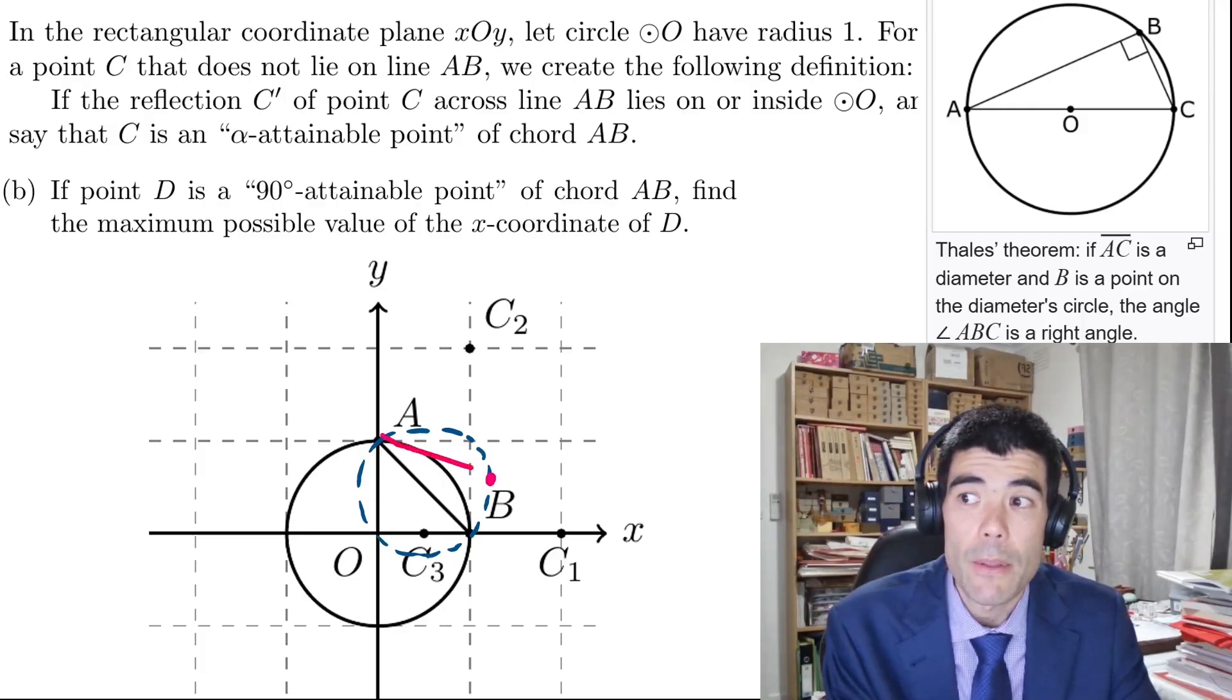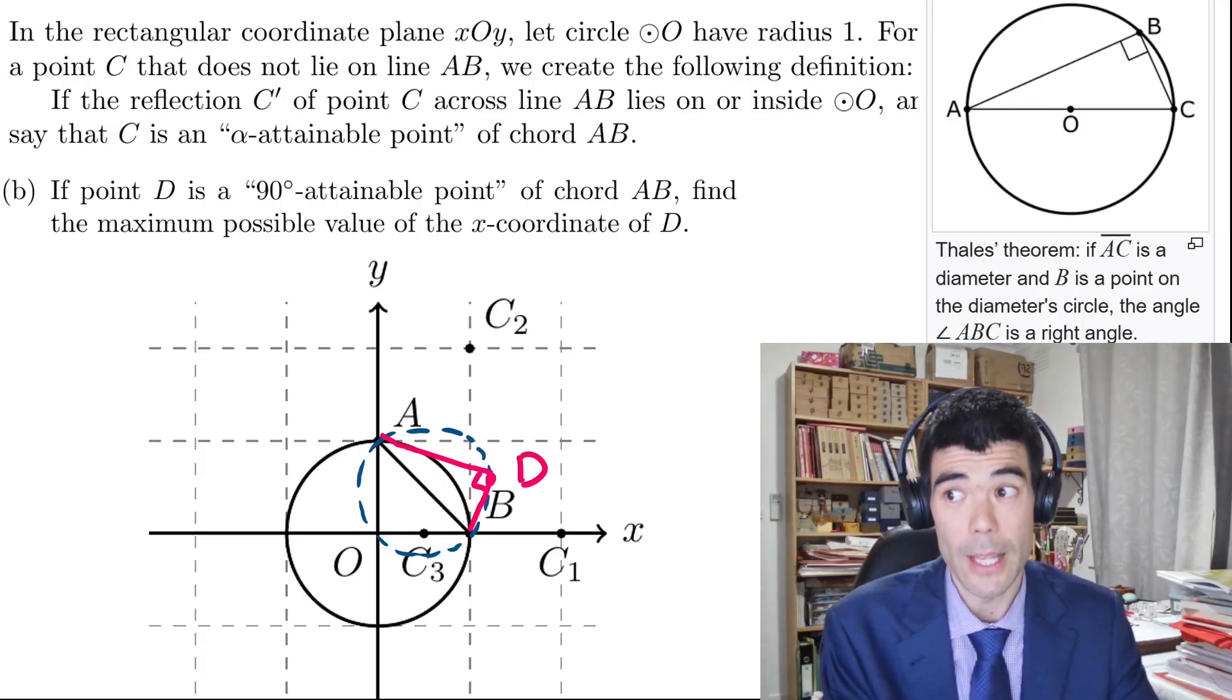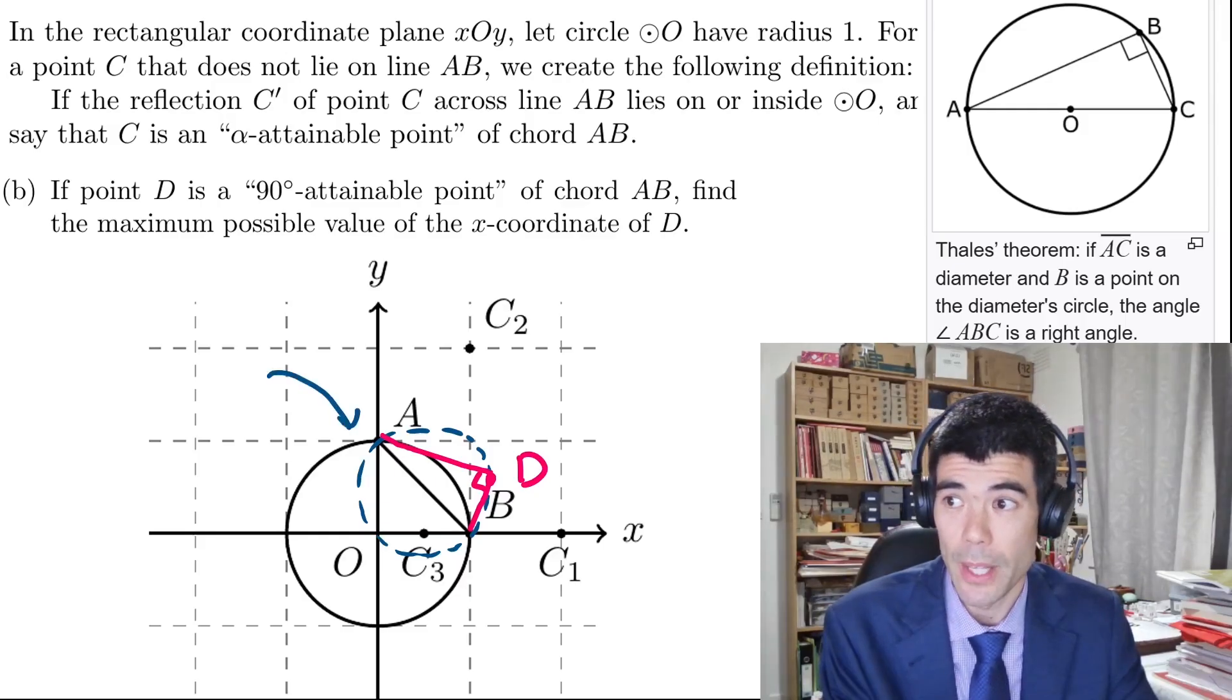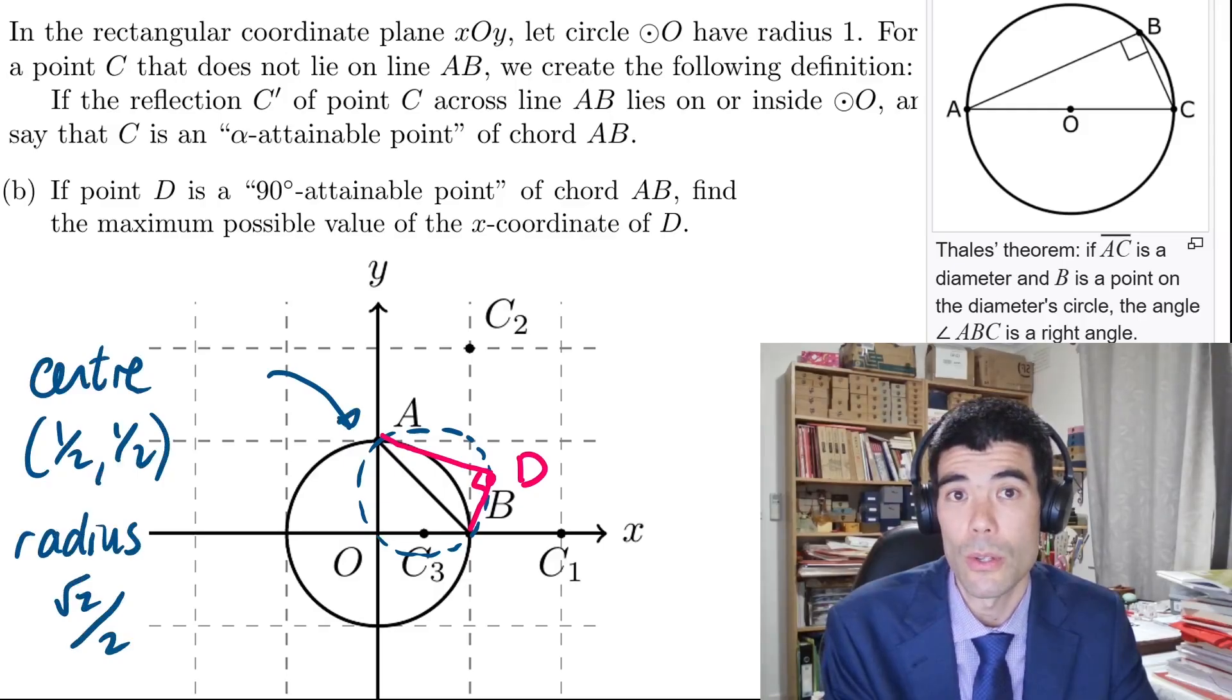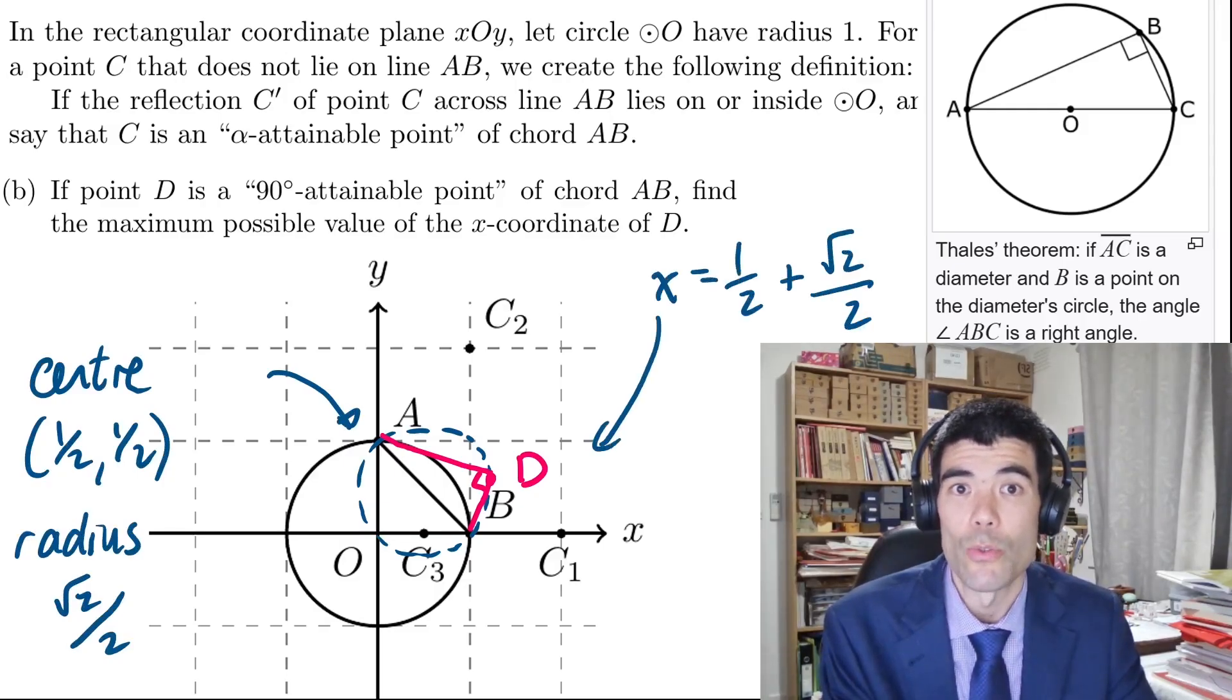Now we want D to have the maximum possible x coordinate, so if we place point D on the right position of the circle there, the circle has center half half, radius root 2 on 2, the x coordinate of D will be a half plus root 2 on 2.